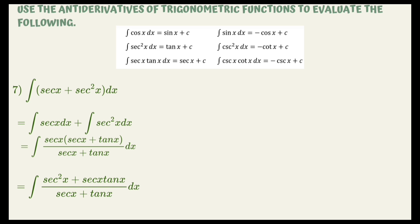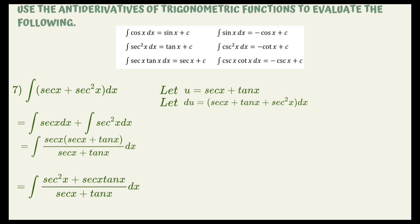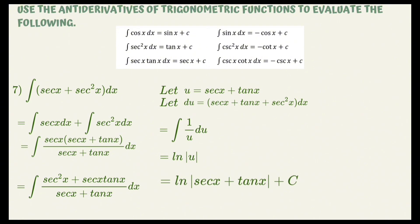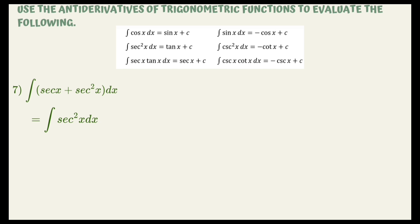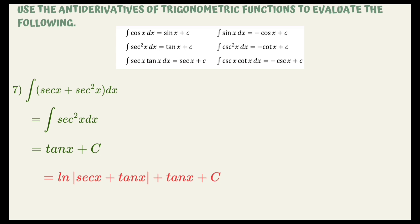Remember, we will use substitution. Let u be the denominator, so u = sec x + tan x, and the numerator will be du: du = (sec x tan x + sec²x) dx. Following the integral of du over u, and the integral of that is the natural log of the absolute value of u. Substituting back, the answer is ln|sec x + tan x| + C. For the integral of sec²x, from the given formulas, the integral of sec²x dx = tan x + C. Combining both results, our final answer is ln|sec x + tan x| + tan x + C.